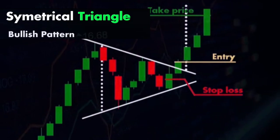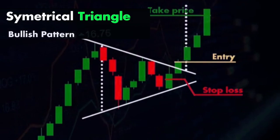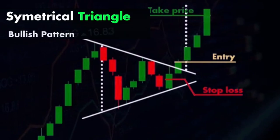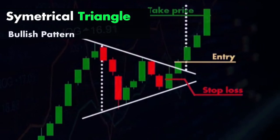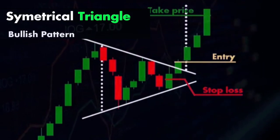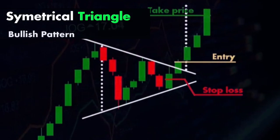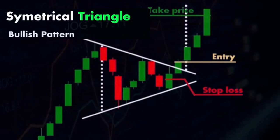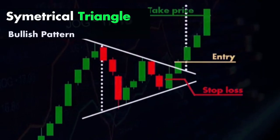Suppose a currency pair is trading in a symmetrical triangle with the upper trend line resistance at 1.2000 and the lower trend line support at 1.1800. As the price consolidates and moves toward the apex, traders will watch for a breakout. If the price breaks above 1.2000 with increased volume, it could signal a bullish move and traders might enter a long position with a stop loss just below 1.2000. Conversely, if the price breaks below 1.1800, traders might enter a short position with a stop loss just above 1.1800. In summary, the symmetrical triangle is a useful pattern in forex trading for identifying potential breakouts and making informed trading decisions.